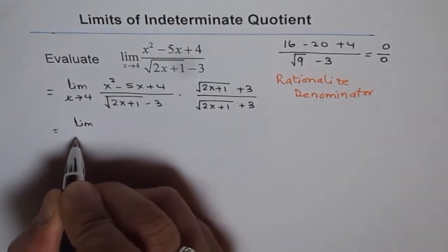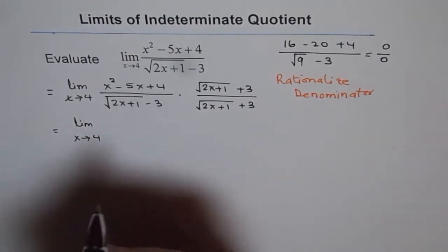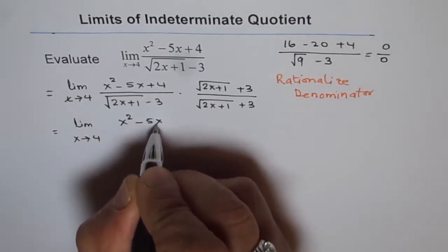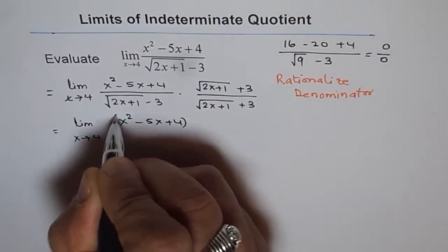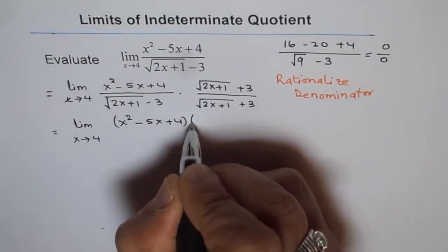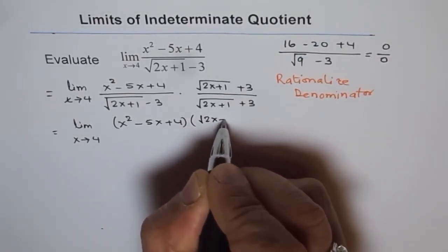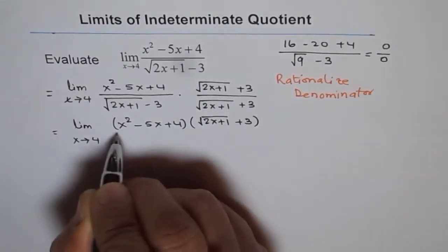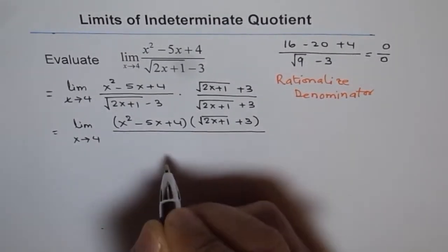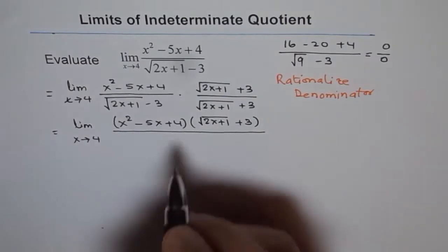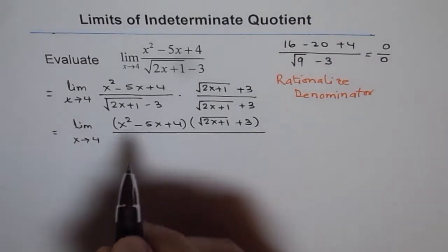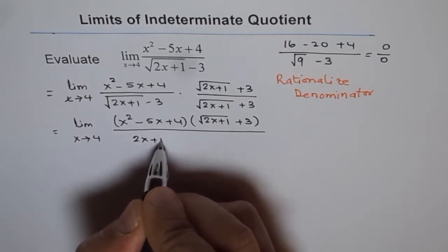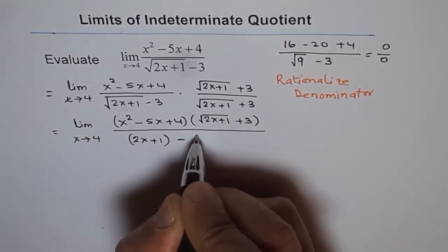We get the limit as x approaches 4, and in the numerator we have x squared minus 5x plus 4 times square root of 2x plus 1 plus 3. We could factor the numerator, which we will do in the next step. In the denominator we get 2x plus 1 minus 9.